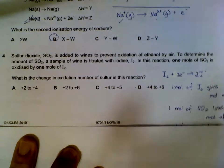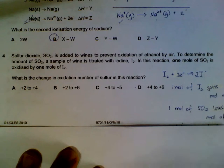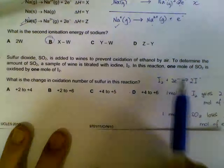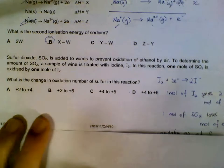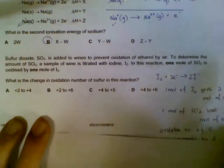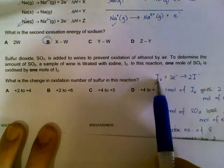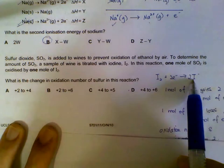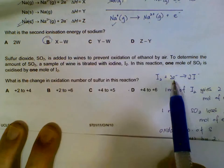Number four, iodine reacting with sulfur dioxide. They give us clues that one mole of sulfur dioxide is oxidized by one mole of iodine. So we write out the half equation for the one that we know. Iodine will become iodide. It itself is reduced.